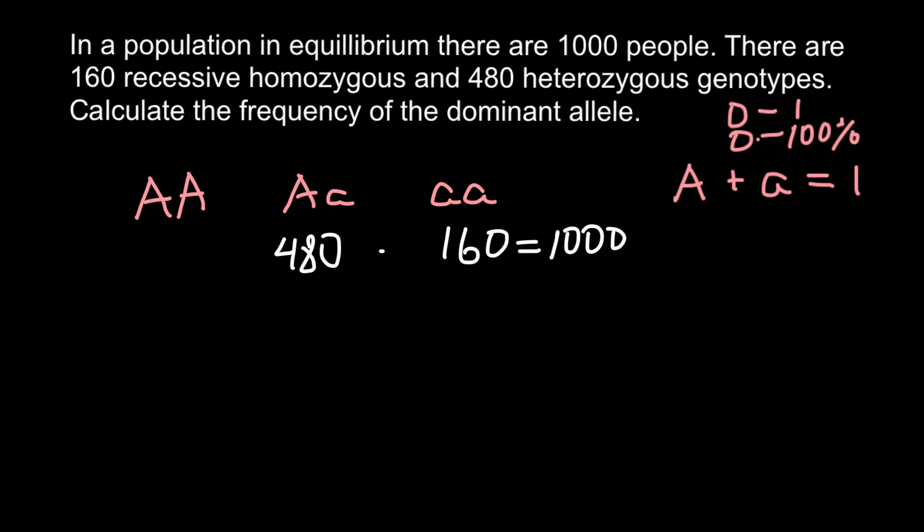It is very easy to find how many people belong to this genotype. We have to add these two numbers and subtract from 1000. And number of people who belong to the homozygous dominant genotype equals 360 people.